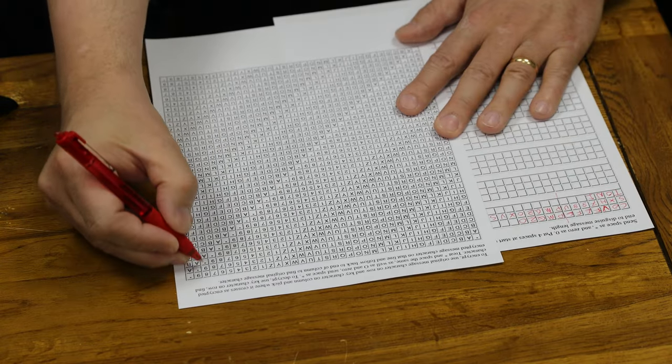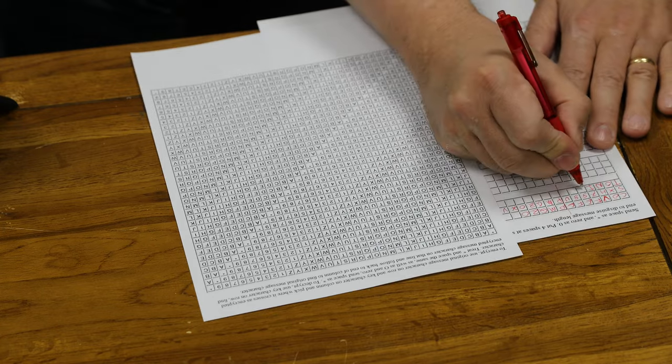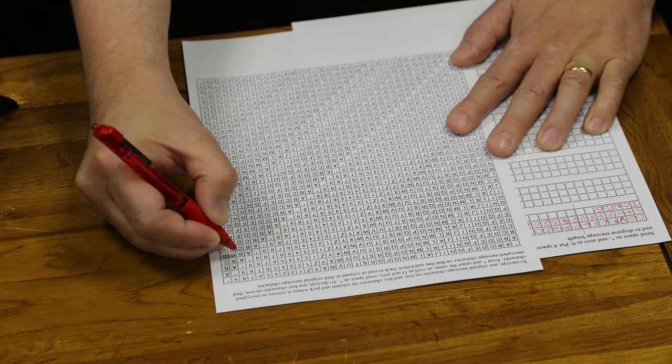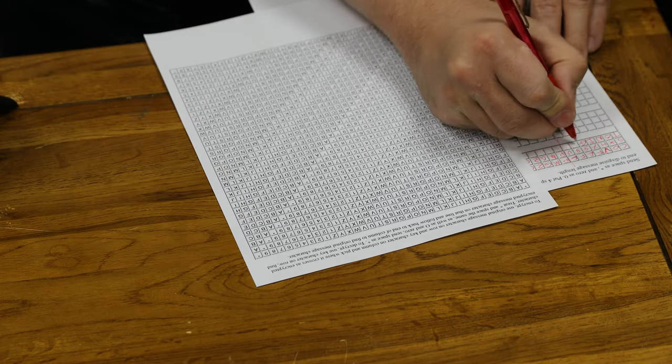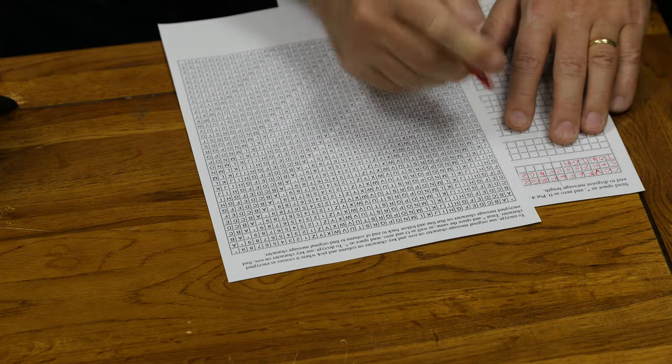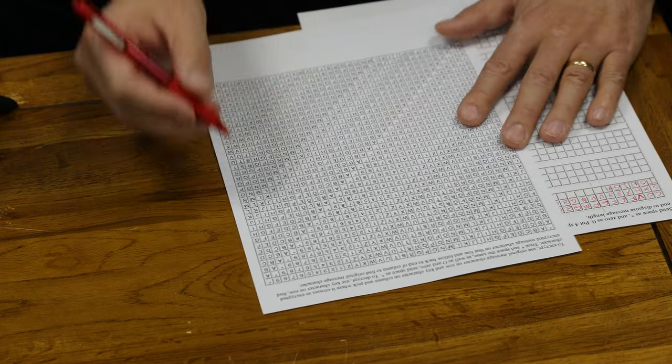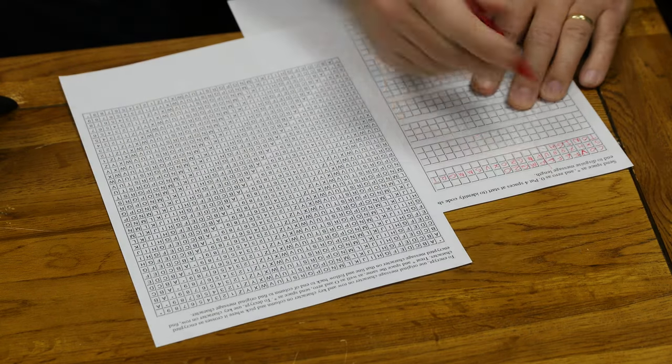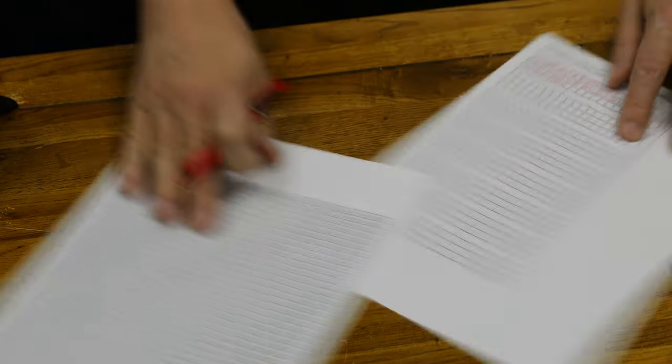E and eight, so we start with an eight and we go down until we find an E, and it's a G. F and eight, so we do an eight and we go down until we find an F, and that's an H. And an E and a U, so we start with a U and we go down until we find an E, and it's a T. So the message is tonight. So I've decoded the message.